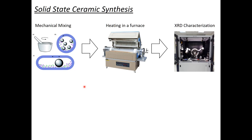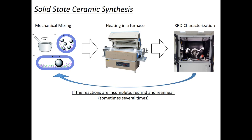Let me describe solid state ceramic synthesis. The first step is mechanical mixing—grinding precursors into a powder using a mortar and pestle or rotary ball mill with hard zirconia or tungsten carbide balls. Then you put the powders into a tube furnace, heating to 700°C and higher. You can also flow gas such as oxygen or argon. After running the reaction, you characterize product phases via X-ray diffraction. In solid state synthesis, the reaction is often incomplete after one cycle, so you have to regrind and re-anneal, sometimes several times.